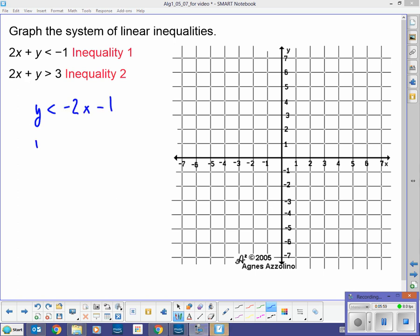So, I'm going to do here. I'm going to rewrite the first one as Y is less than negative 2X minus 1. And, then the second one will be Y is greater than negative 2X plus 3. Okay, so I just rewrote those so we can look at them in slope-intercept form. So, let's do the first one here. Y is less than negative 2X minus 1.